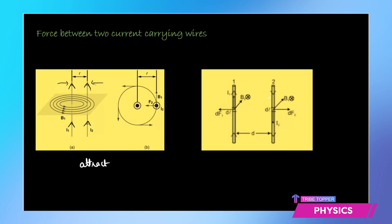but this time the currents are in the opposite direction, I1 upward and I2 downward, in that case the magnetic field pattern formed is such that they repel each other.